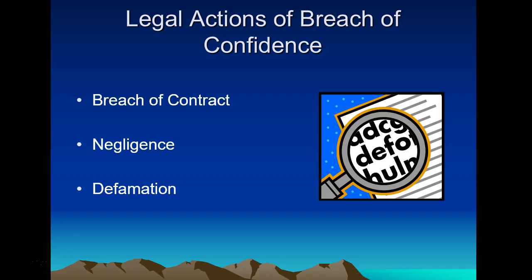Negligence, as we discussed in the earlier lecture, means damage can come in the form of psychological damage or financial damage — all sorts of damages can accrue, and it must be proven. The third is defamation, which I'll talk about shortly. As well as those civil tort actions, remembering that even if the nurse is implicated in a breach of confidence and the hospital is named as the defendant, the individual nurse can also face disciplinary action by their employer.